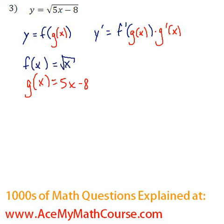So we want to take f prime of g of x. So first let's just find f prime of x and remember that square root of x is just x to the power of half.